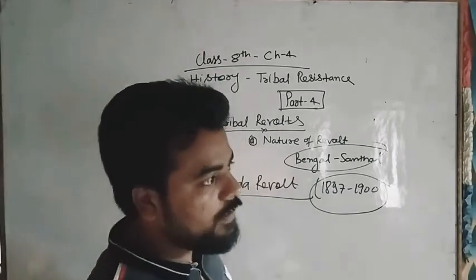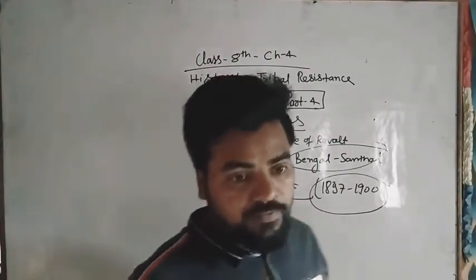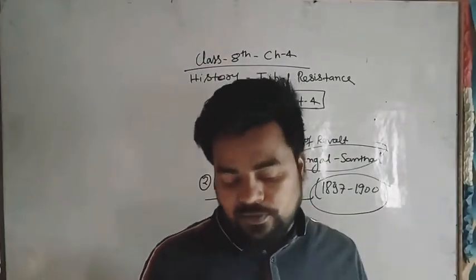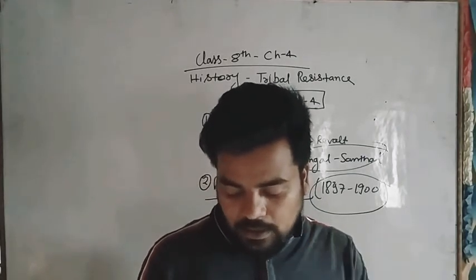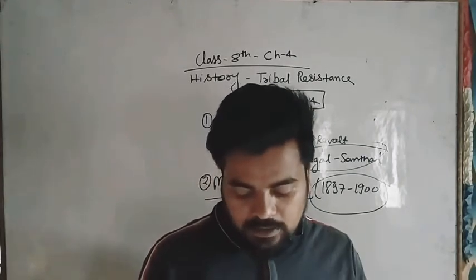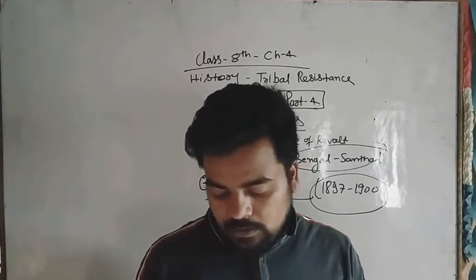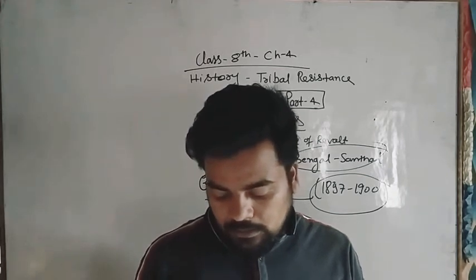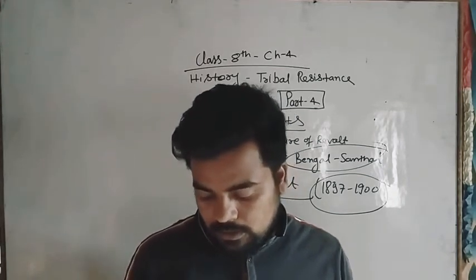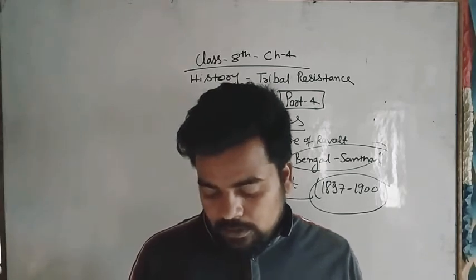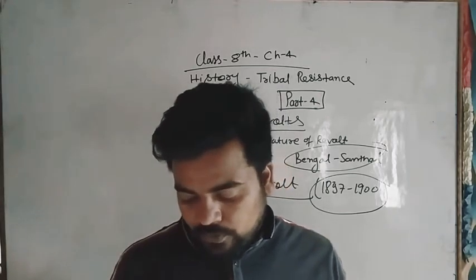In 1894, the monsoon failure led to widespread starvation and epidemics. Birsa emerged as a leader of his people, regarded as a father figure of the earth and the Munda community.